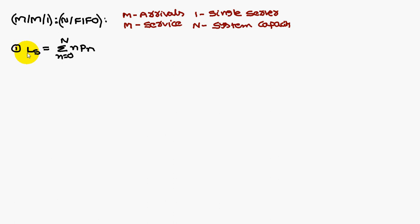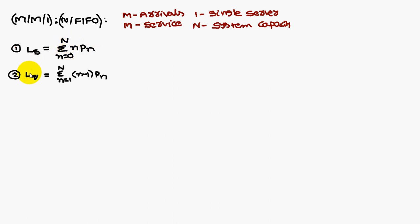Here we are going to discuss some formulas. The first one is length of the system. The formula is: Ls = sigma n equals 0 to N of n*P(n). Length of the queue is Lq = sigma n equals 1 to N of (n minus 1)*P(n).